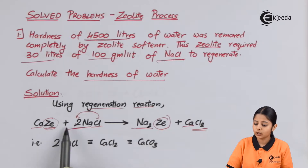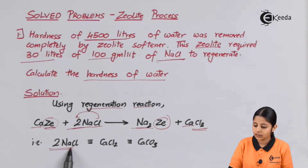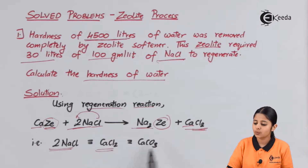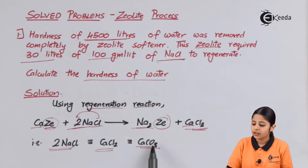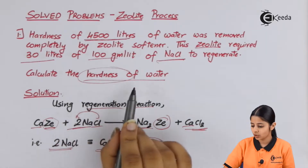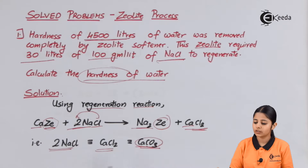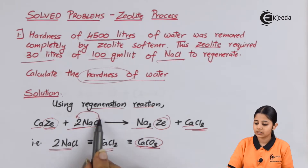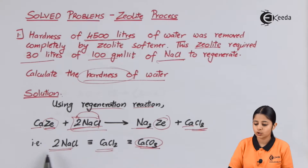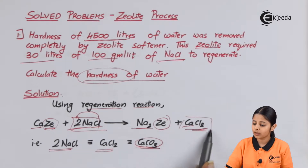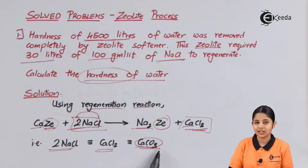In this regeneration reaction, 2 moles of NaCl correspond to 1 mole of CaCl₂, which corresponds to CaCO₃. Why do we take CaCO₃? Because whenever we find the hardness of water, we always express it with respect to its CaCO₃ equivalence. That is the reason why 2NaCl on the reactant side corresponds to CaCl₂ on the product side, which eventually corresponds to CaCO₃.